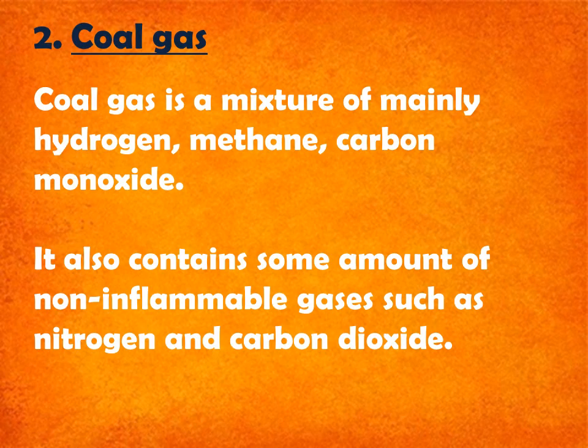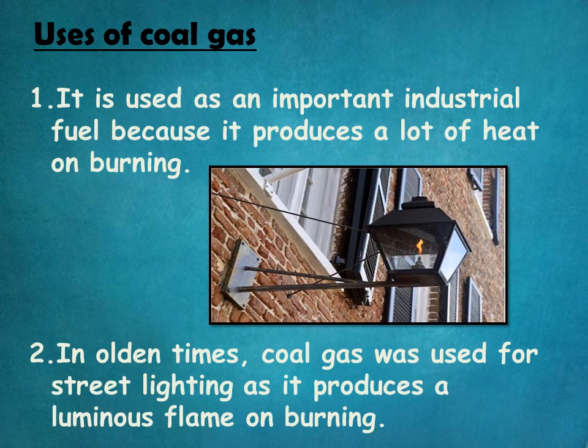Coal gas is a mixture of mainly hydrogen, methane, and carbon monoxide. It also contains some amount of non-inflammable gases such as nitrogen and carbon dioxide. Coal gas is used as an important industrial fuel because it produces a lot of heat on burning. In olden times, coal gas was used for street lighting as it produces a luminous flame on burning.